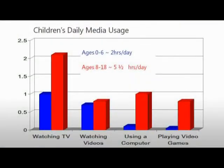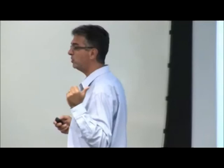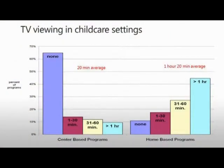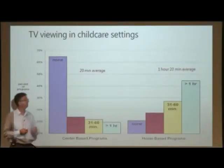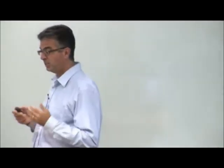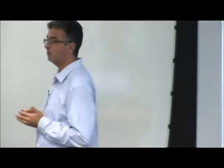In 1970, the average age at which children began to watch television was four years. And today, based on research that we've done, it's about four months. So there's been a dramatic shift in the age at which children begin to interact with these media. And it's not just the age that's at least potentially concerning. It's the amount of time that they spend. Children zero to six spend about two hours a day, and children eight to 18 spend about five and a half hours a day. Children in home-based programs watch an additional hour and 20 minutes a day. The typical preschool child today watches between four and five hours of television a day. They're only awake for about 10 to 12 hours a day. So they're spending close to 40% of their waking hours in front of a TV screen.